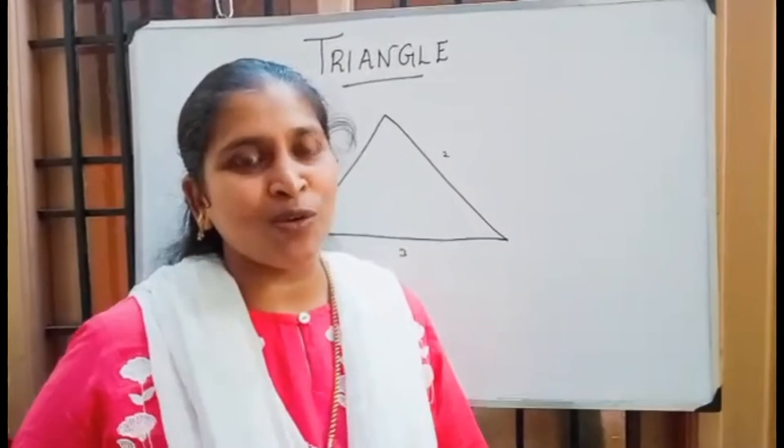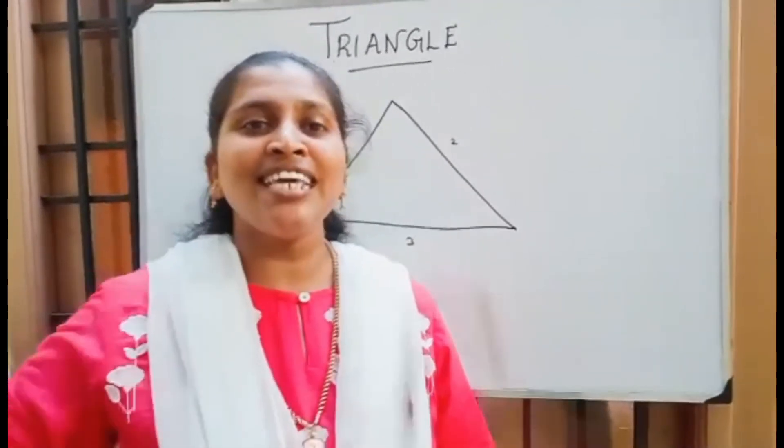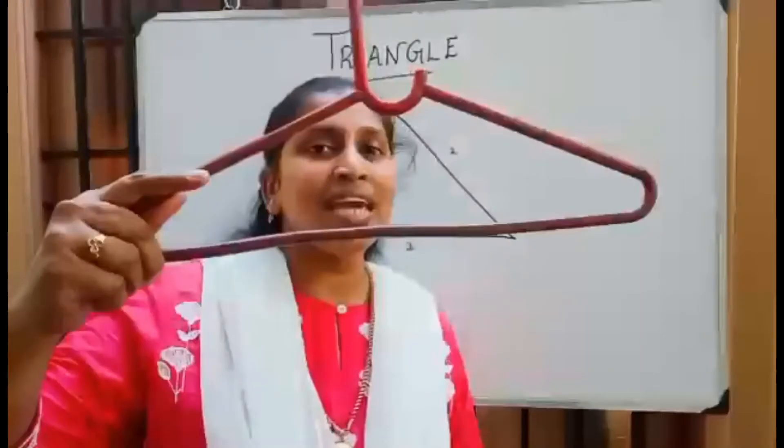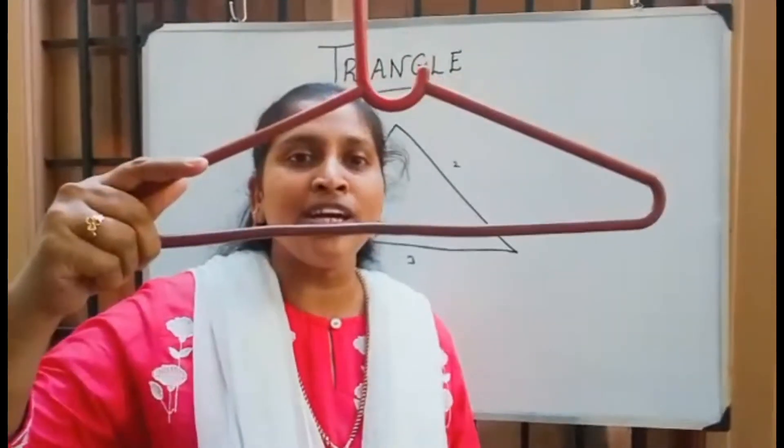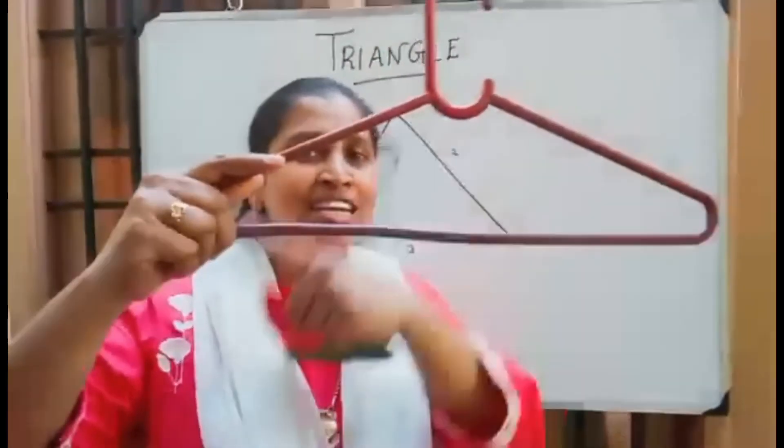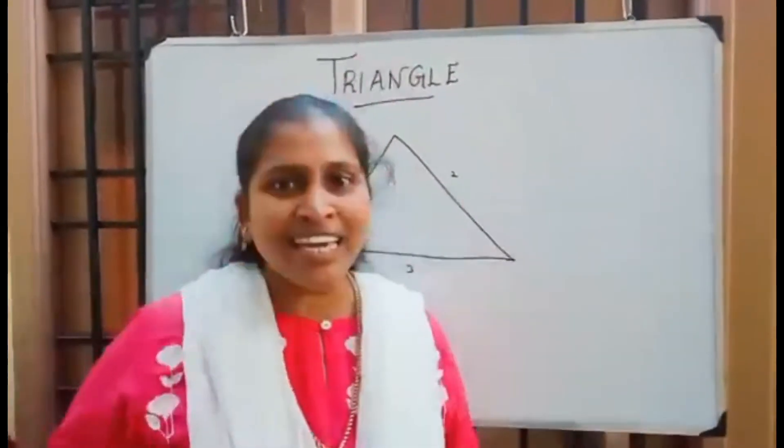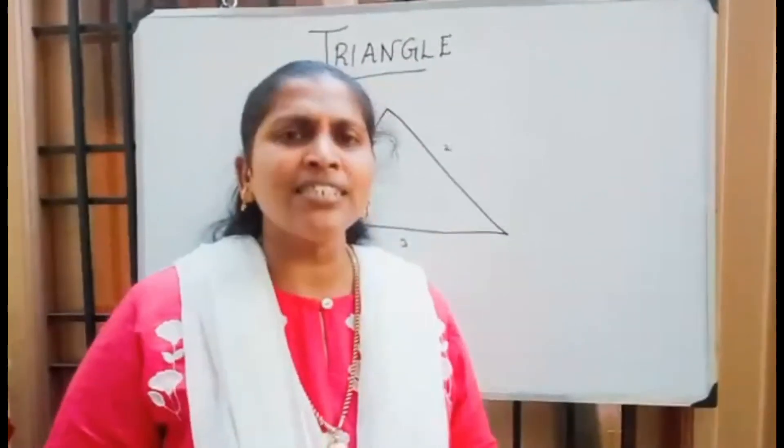I'll show you some things. See the hanger which your mommy and daddy used to put clothes and hang it in the cupboard? This is triangle in shape. Next, when you cut the watermelon into pieces you get triangle in shape.